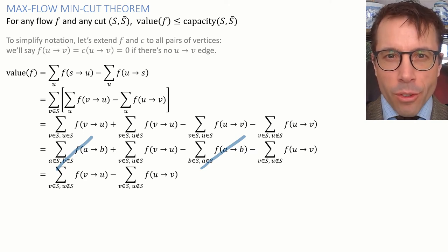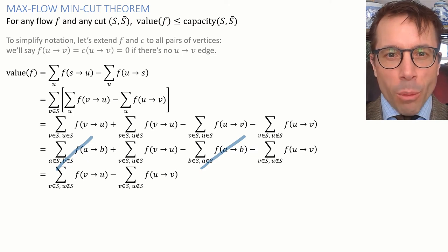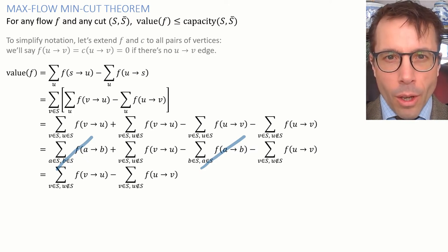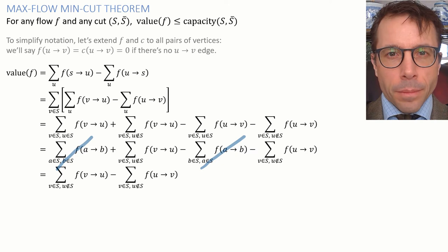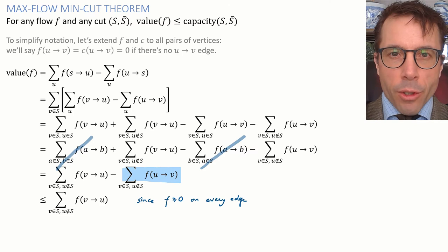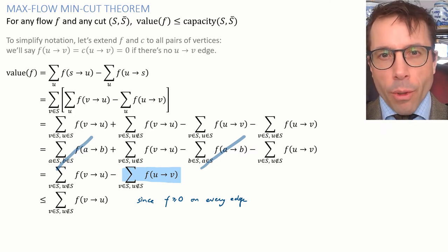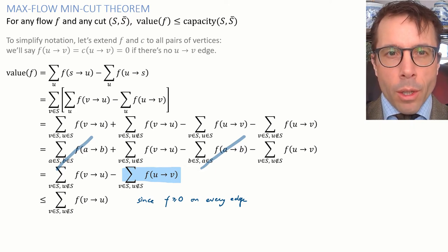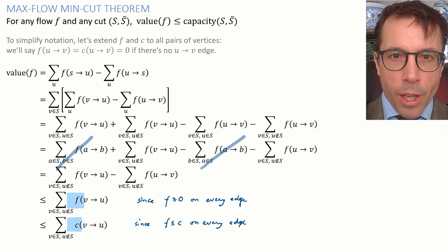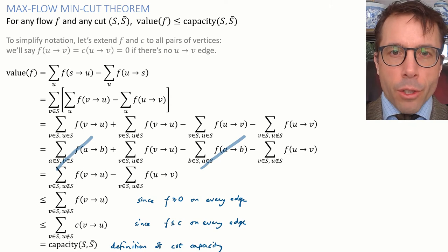This is exactly the sort of canceling we did in our simple sketch on the last slide. But we found a way to write out the flow conservation equations so that they work no matter how complicated the graph is inside S. And now we're nearly done. The expression that we've found is less than or equal to the first term because the second term is above or equal to zero, seeing as flows have to be above or equal to zero on each edge. And similarly, the flow on each edge is less than or equal to capacity, which gives us this inequality. And hey presto, we're left with the definition of cut capacity, QED. We've proved our theorem.